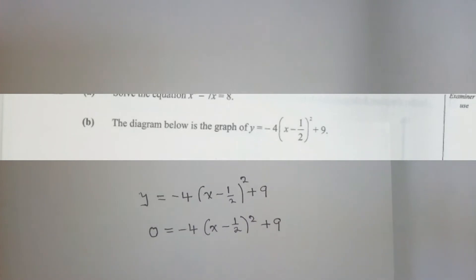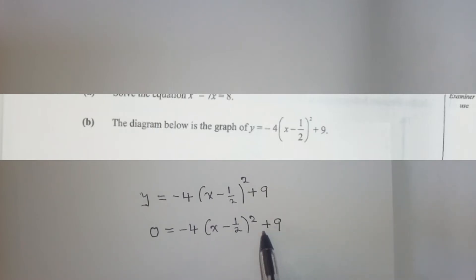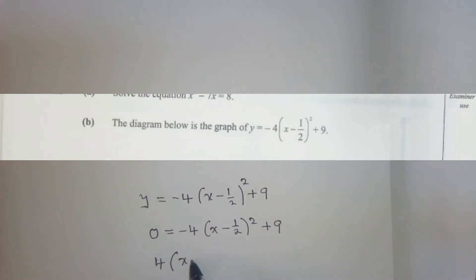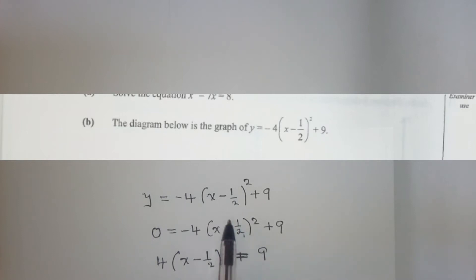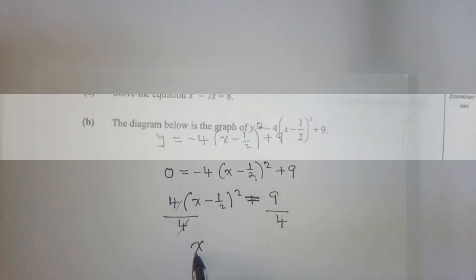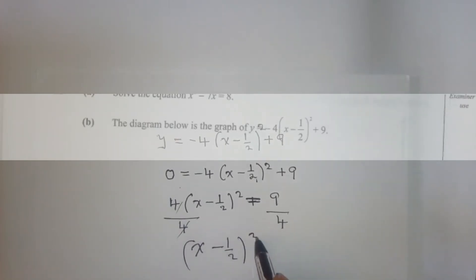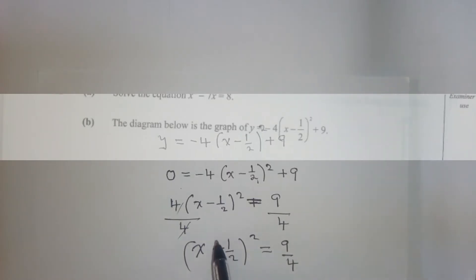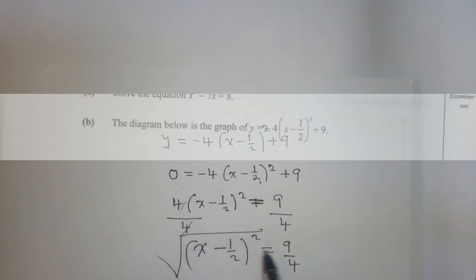The equation is set up and we solve for x by grouping like terms. We get four, open bracket, x minus one over two, close bracket, squared, equals nine. We divide both sides by four, so we remain with x minus one over two squared equals nine over four. We then get rid of the power by taking the square root of both sides.